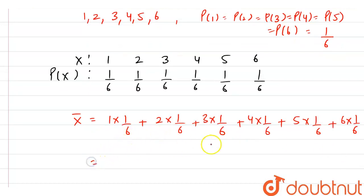Now here, if we take 1 by 6 common from all of these terms, then we can write 1 by 6 into 1 plus 2 plus 3 plus 4 plus 5 plus 6.